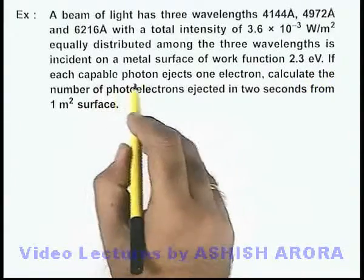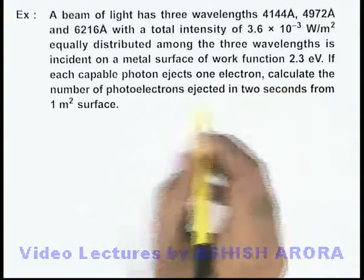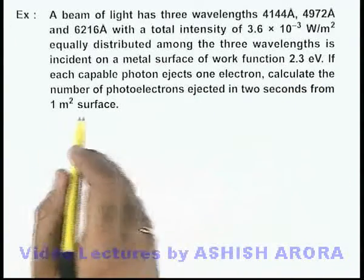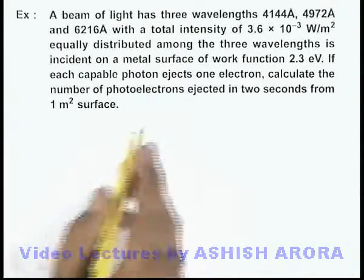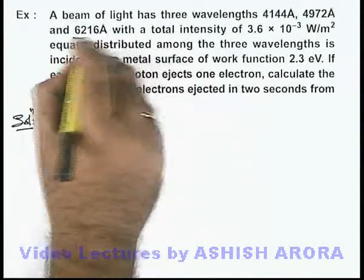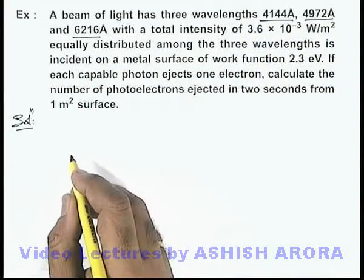If each capable photon ejects one electron, we are required to calculate the number of photoelectrons ejected in 2 seconds from 1 m² surface. First, we need to check how many of these three wavelengths are capable of ejecting an electron.